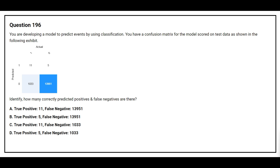Question number 196. You are developing a model to predict events by using classification. You have a confusion matrix for the model scored on test data as shown in the following exhibit. Identify how many correctly predicted positives and false negatives there are. Option A: True positive 11, False negative 13951. Option B: True positive 5, False negative 13951. Option C: True positive 11, False negative 1033. Option D: True positive 5, False negative 1033.